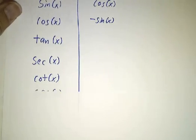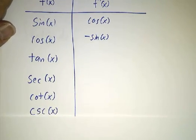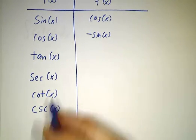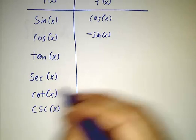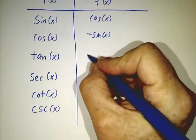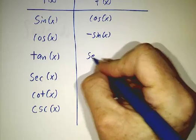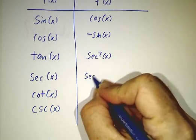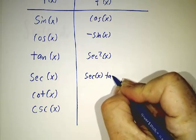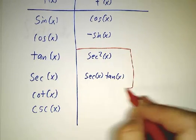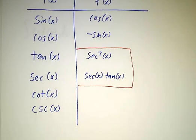The other four trig functions — if you want the derivatives of them, they're just ratios of sines and cosines, and so you get them by the quotient rule. The derivative of tangent winds up being secant squared of x. The derivative of secant winds up being secant of x times tangent of x. And those come up a lot — we will find these formulas to be very, very useful.